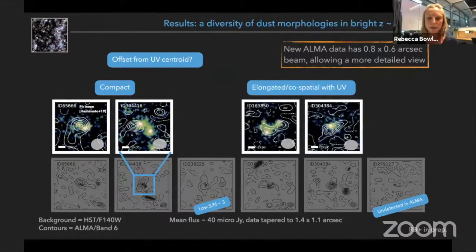In addition, we see evidence for elongated dust emission that's co-spatial with the ultraviolet. For example in this case, the ALMA measurement splits into two clumps which seem to be aligned with the rest frame ultraviolet emission.